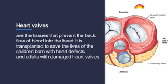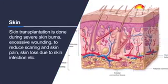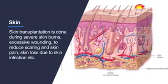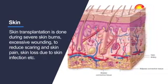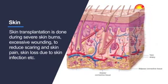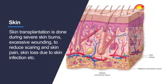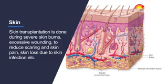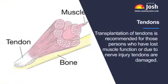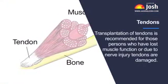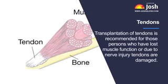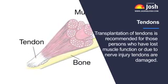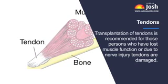Skin: skin transplantation is done during severe skin burns, excessive wounding, to reduce scarring and skin pain, and skin loss due to skin infection. Tendons: transplantation of tendons is recommended for people who have lost muscle function or whose tendons are damaged due to nerve injury.